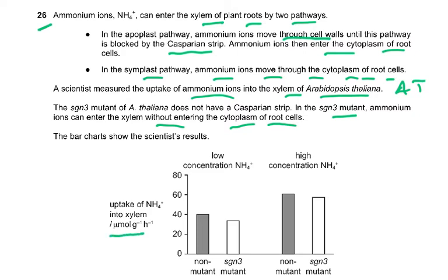The chart shows uptake of ammonium ions into xylem, comparing low concentration and high concentration of ammonium, for the non-mutant and the mutant. There is not much difference between them. Then in the mutant at low concentration of sodium, again we have similar values for the non-mutant and the mutant.